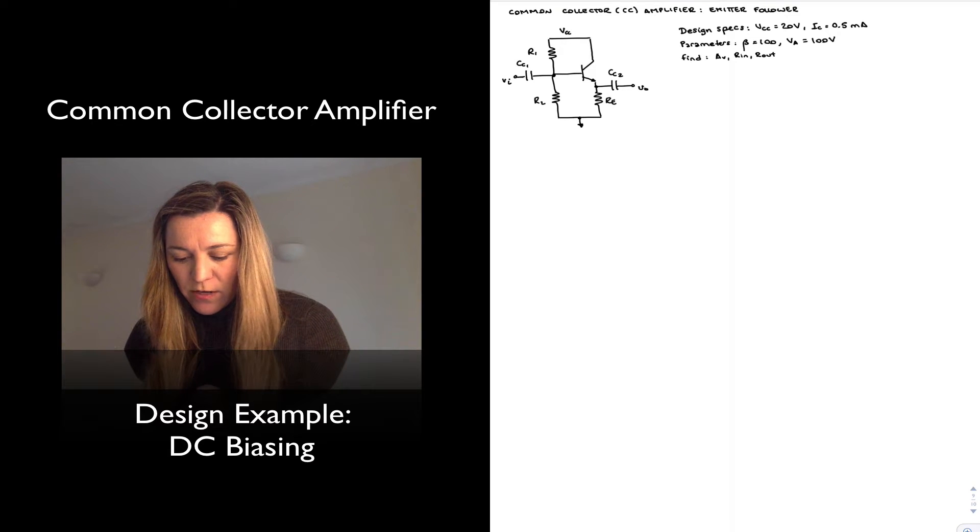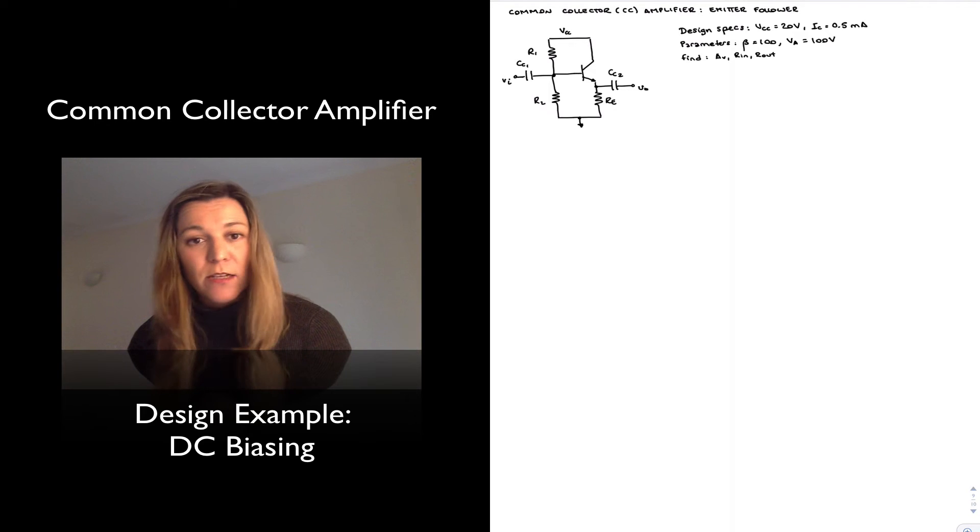I have drawn the circuit skeleton here and I'm going to assume, for the sake of example, that we have a single supply VCC of 20 volts with a quiescent collector current of half a milliamp.